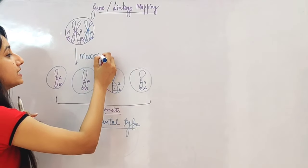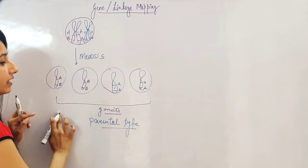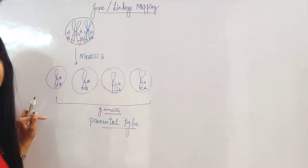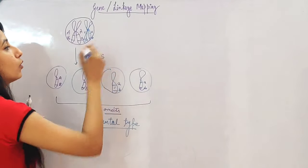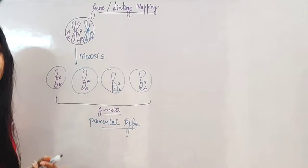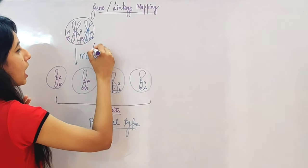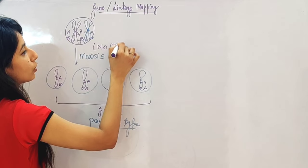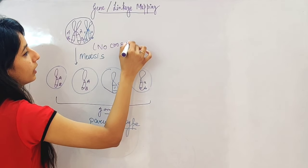If we have a condition where all gametes are parental type, then what happened in that meiosis? There is no crossing over.